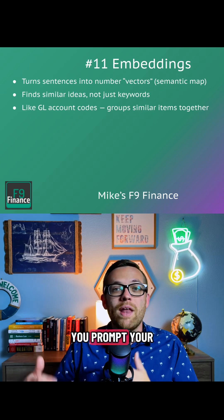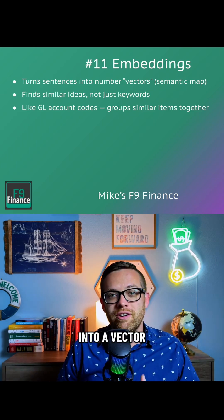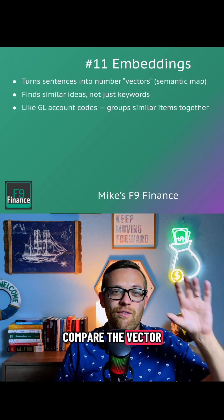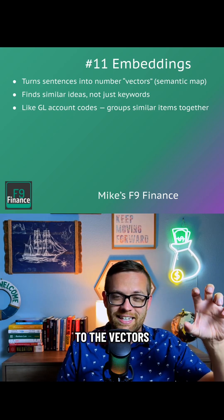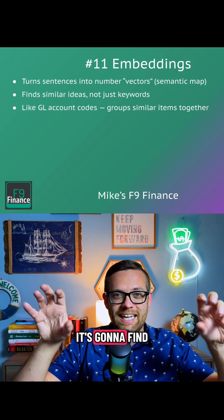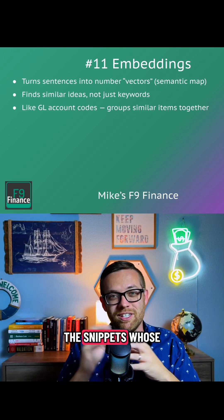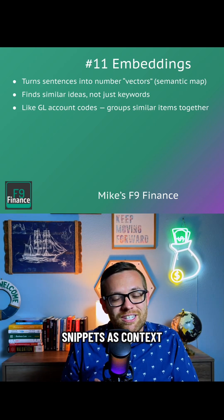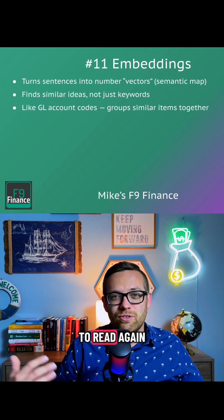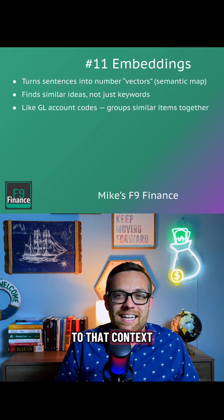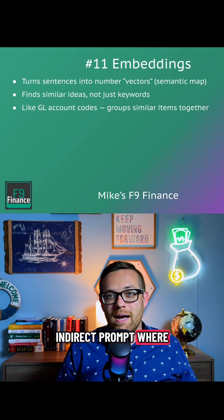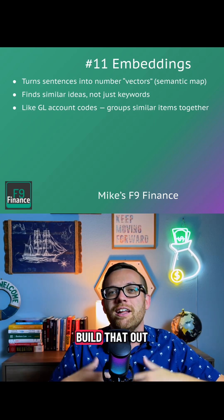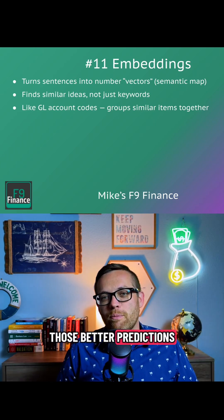So when you prompt, your prompt is turned into a vector just like the data that's been stored. The AI tool is going to compare the vector of the prompt you just asked to the vectors from your stored documents. It's going to find the closest matches — the snippets whose meanings are most similar to your query — and return those snippets as context for the model to read. It's like an indirect prompt where you have your main prompt, and then it gets additional information to build that out and help make better predictions.